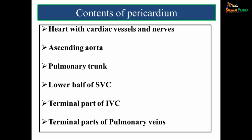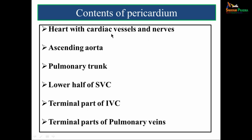What are the contents of pericardium? The pericardium is a fibroserous sac which encloses the heart. The main contents therefore are: the heart along with the cardiac vessels and nerves; the blood vessels — the ascending aorta, the pulmonary trunk, the lower half of the superior vena cava, the terminal part of the inferior vena cava, and the terminal parts of the pulmonary veins.